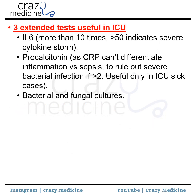Then, three extended tests useful in ICU. First is interleukin-6 — if it is more than 10 times the upper limit or more than 50, it indicates cytokine storm. Then procalcitonin, which is required because CRP cannot differentiate inflammation from sepsis — procalcitonin can be used to rule out severe sepsis or severe bacterial infection. Then bacterial and fungal cultures — sending early cultures before initiation of antibiotics is important.